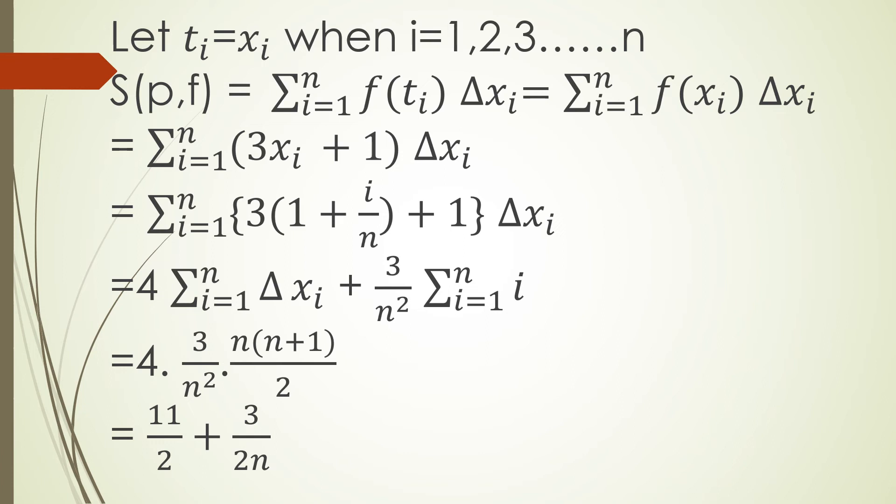equals summation from i equals 1 to n, 3(1 + i/n) + 1 into Δxi equals 4 into summation of Δxi where i is from 1 to n plus 3/n² into summation of i from 1 to n equals 4 · 1 + 3/n² · n(n+1)/2 equals 11/2 + 3/(2n).